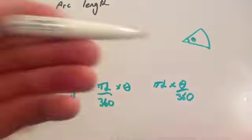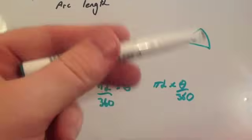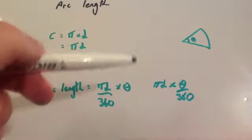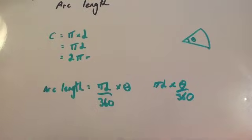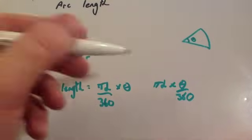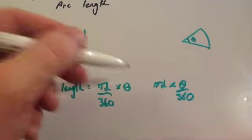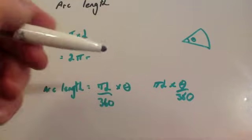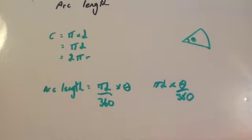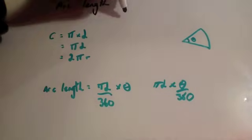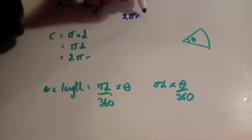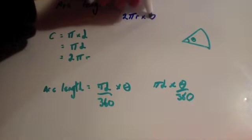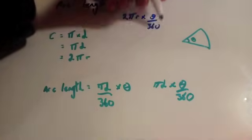Theta over 360 would be the proportion of the whole circle, and then you times that by the circumference. One final way of writing that, instead of using pi times diameter, you could also use 2 pi r times theta over 360.